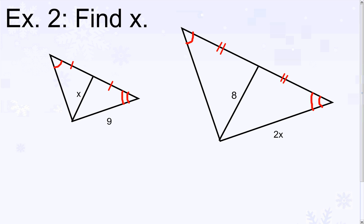The median of the first triangle is x, corresponding to the median of the second triangle, which is 8. The side of the other triangle is 9, corresponding to the side 2x. Between the two similar triangles, the sides are 9 and 2x.